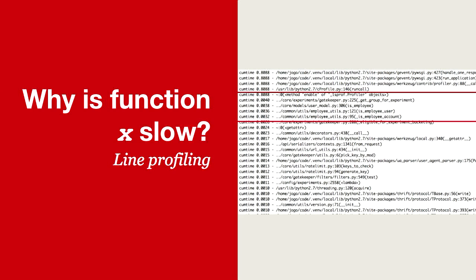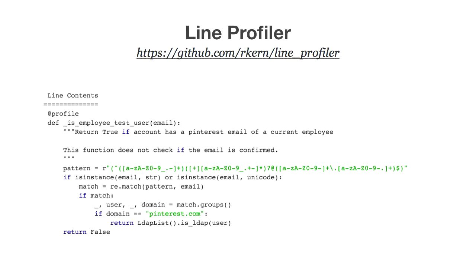Now we know this one function is really slow, but why? Just saying the function is slow isn't always useful — you want to find out what's going on so you can make it better. For the is-employee case, if you look at it long enough you could guess where it's slow, but functions are usually much more complicated. To solve this, we use a line profiler.